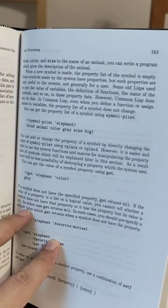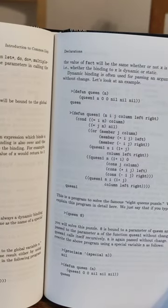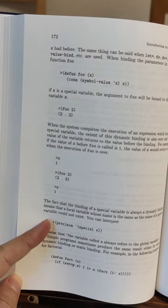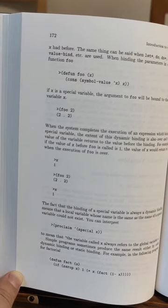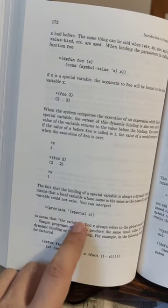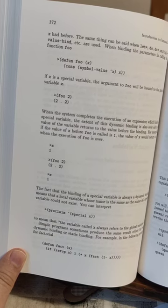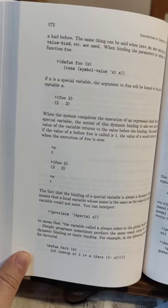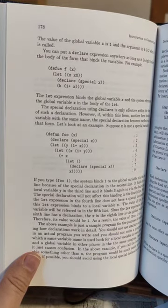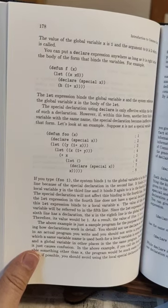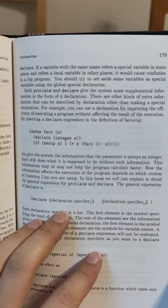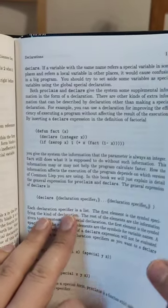All right, then let's march on to proclaim and special, which are both rather nicely explained over here. Here how you can be proclaiming a variable as special and thereby making it dynamic. And the explanation here is very intuitively given, that you can interpret proclaim special of x to mean that the variable called x always refers to the global variable x. So that means also when it is locally changed, that this is going to be what is happening. And then you're getting to see a couple of function definitions and also how to use declare by giving the type of the variable, here integer, in order to speed up the factorial computation.